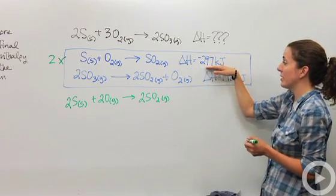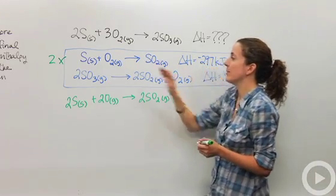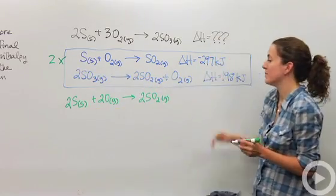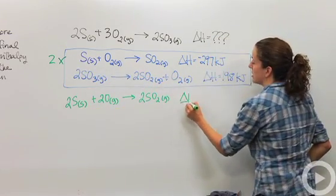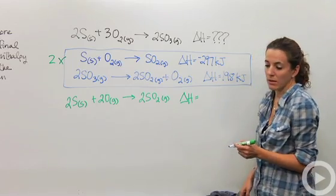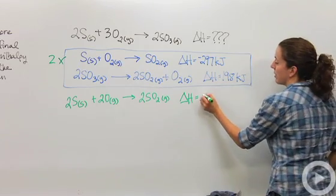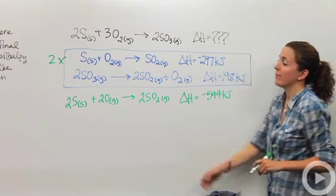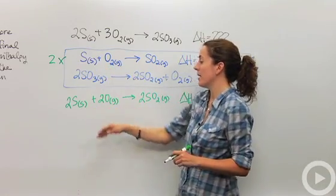Because this negative 297 kilojoules is telling me how much energy is going to be released for one mole of sulfur. But I'm now doing two moles of sulfur, so I'm going to multiply this by two. So my delta H is now going to be negative 594 kilojoules. Okay great. So now I have my two moles of sulfur on my reactant side. That's awesome.